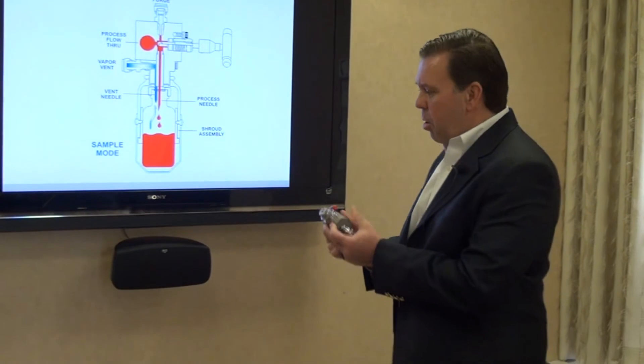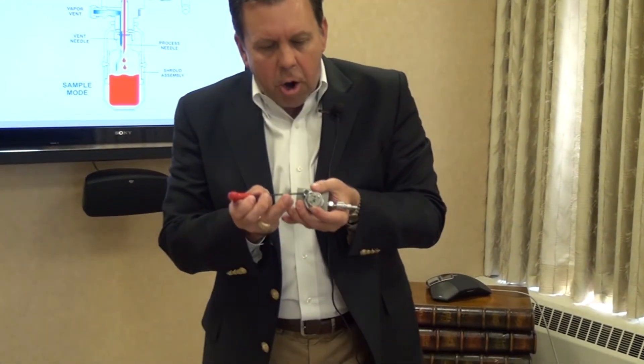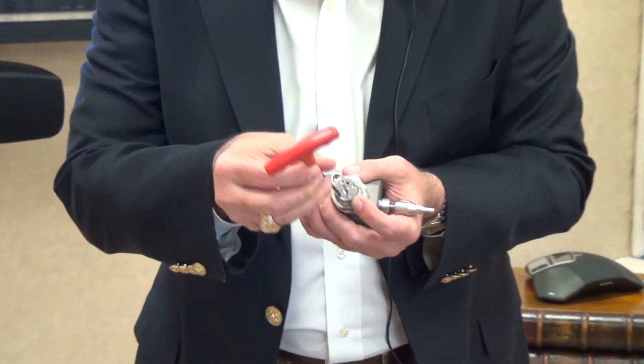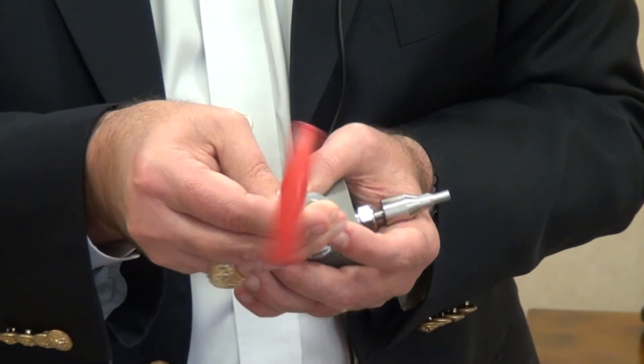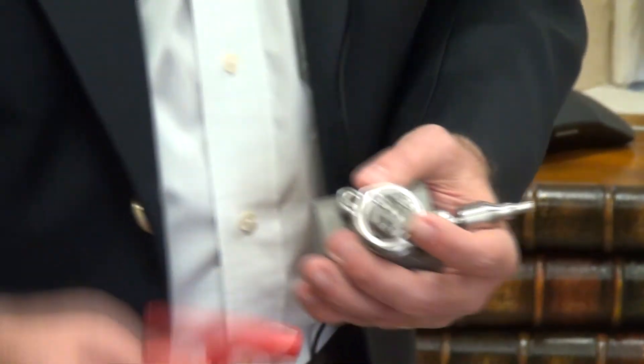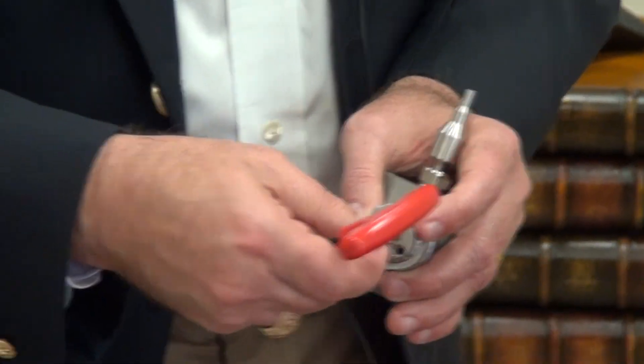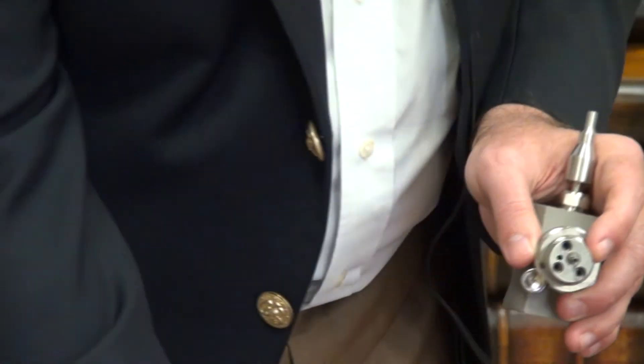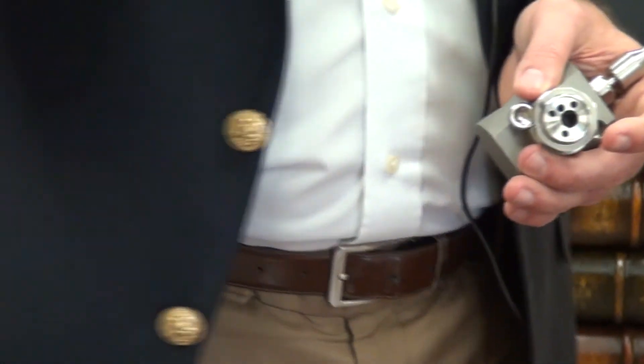So here again is our sampling valve. I've got the vent needle removed for ease. You can see there are three hex head screws on what we call the retainer ring. So if you have to replace or desire to change the process needle, you simply remove those three screws, then remove the retaining ring, and now the needle can be removed, can be replaced, can be replaced with a larger diameter needle, easily reinstalled. Retainer ring goes back on—very quick maintenance, very easy maintenance.